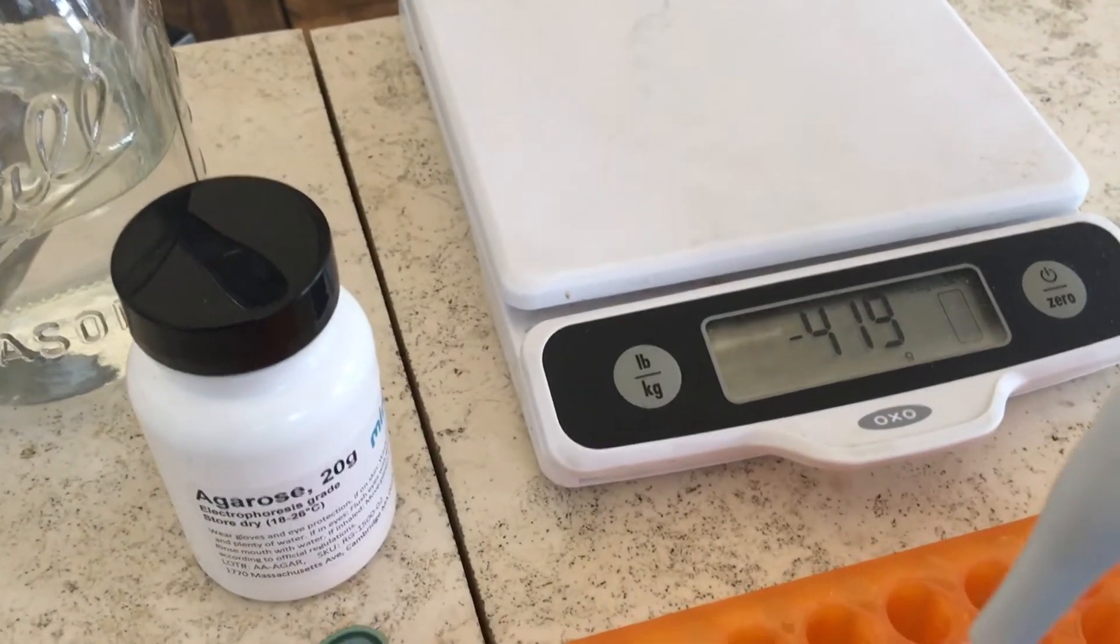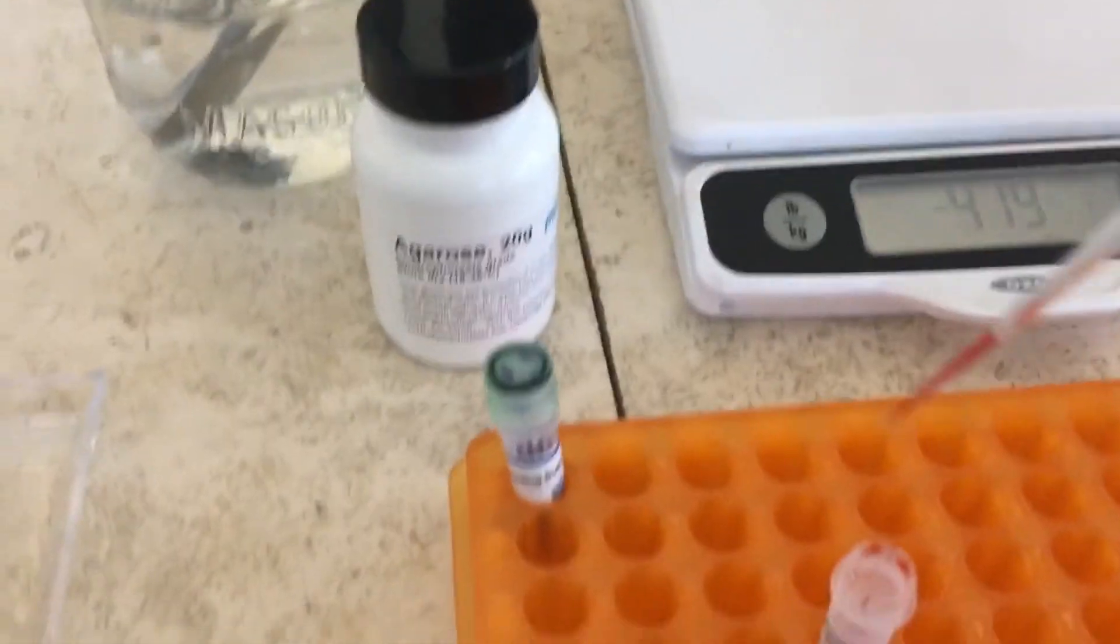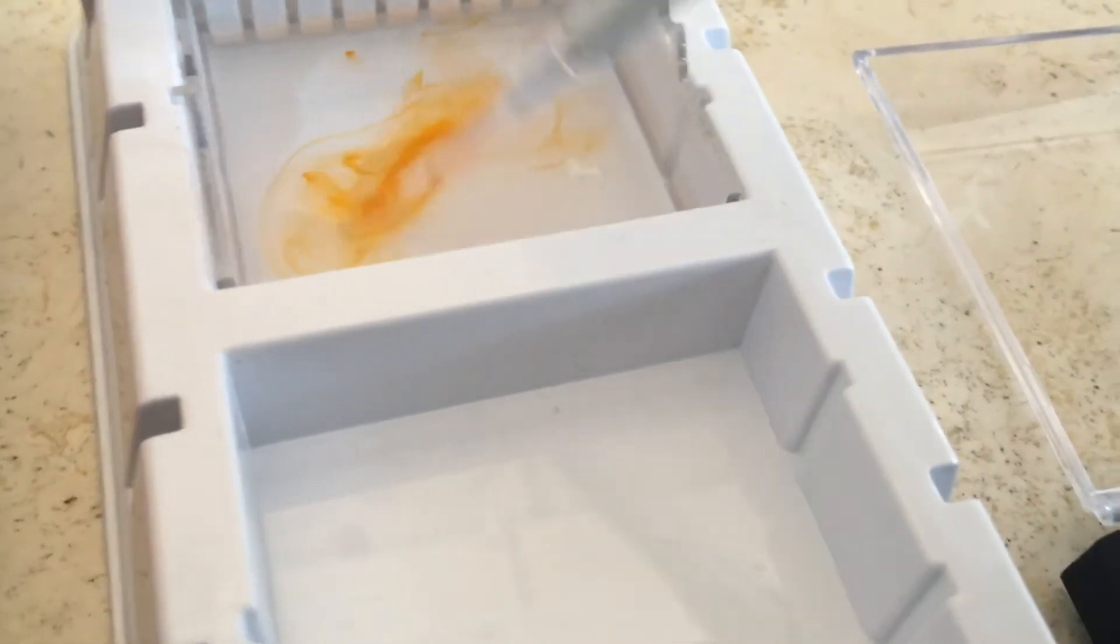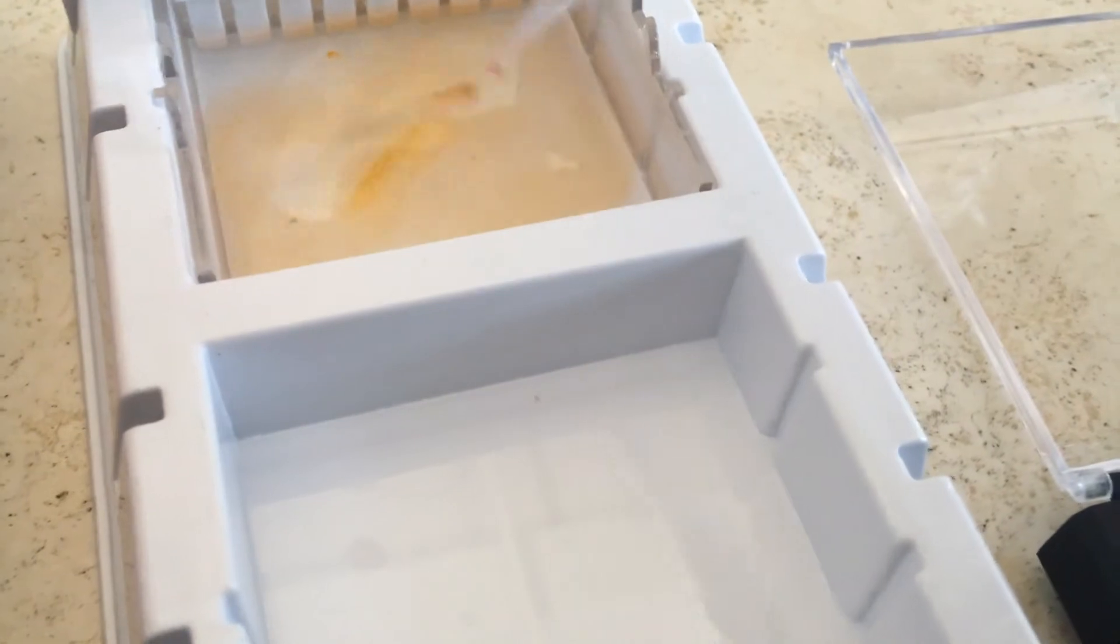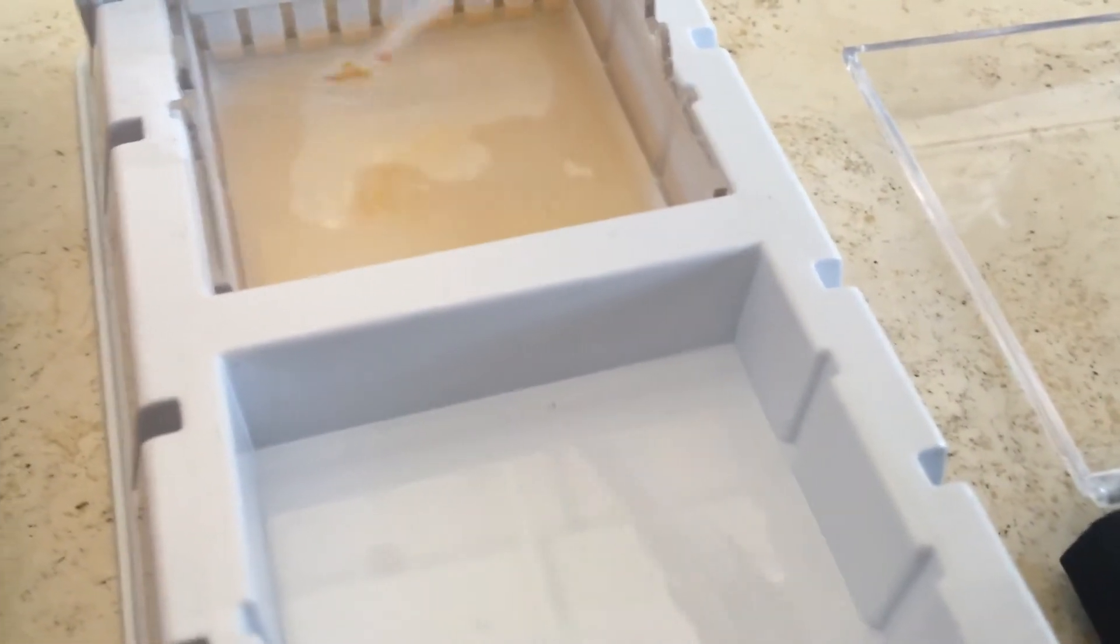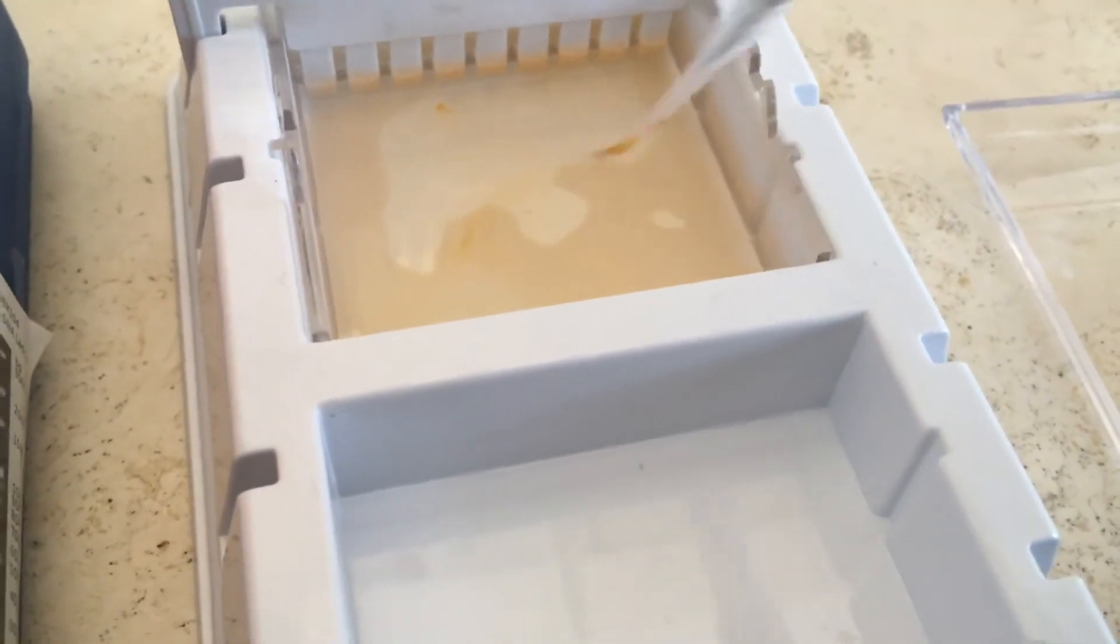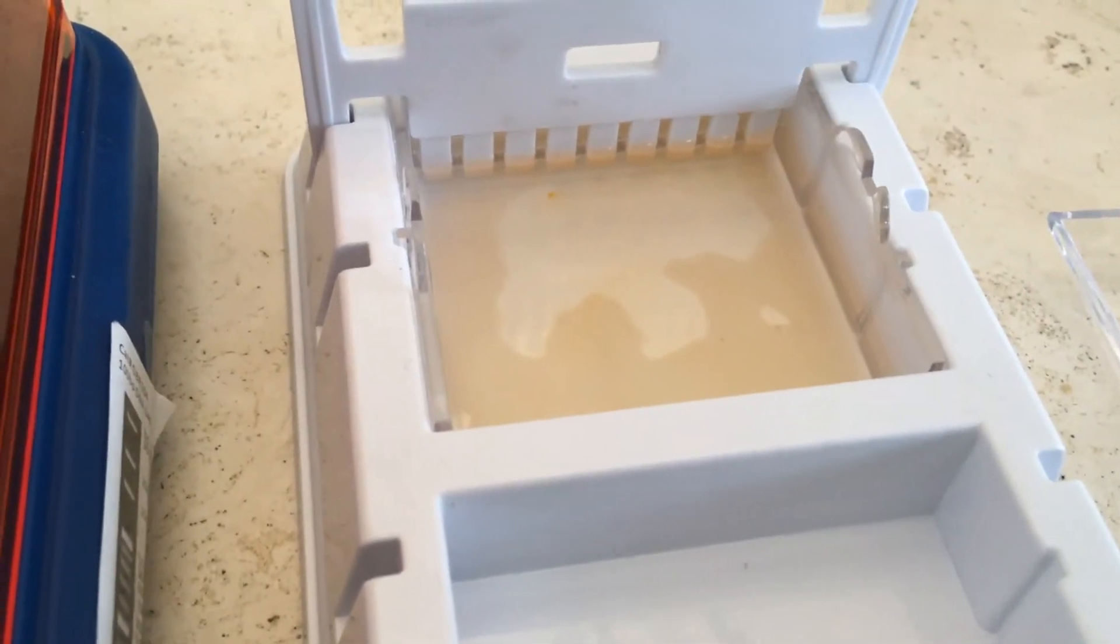So we're going to take about two microliters of the nucleic acid stain and we're going to mix it into the gel. It's still liquid. It hasn't formed a gel yet. So you just sort of blend it around and distribute it until the stain is fairly equally distributed. I call that good. So now we're just going to let it sit for about 10 minutes so it has a chance to set.